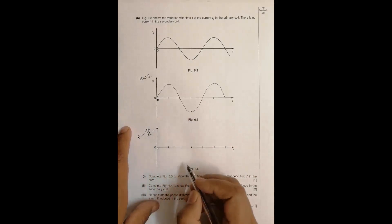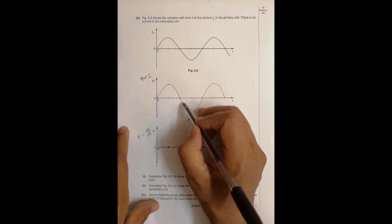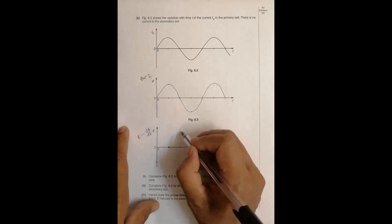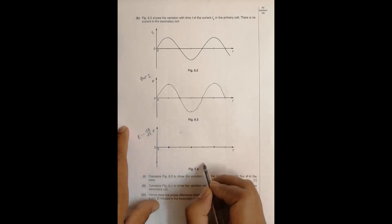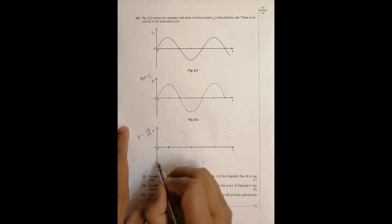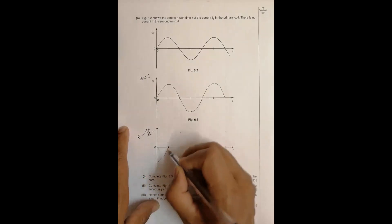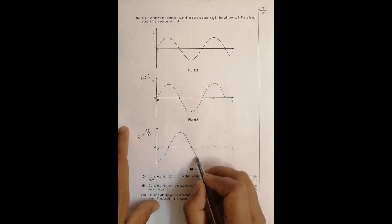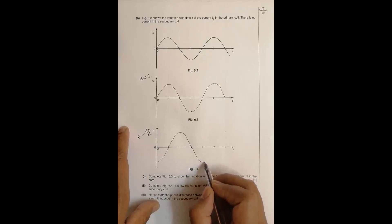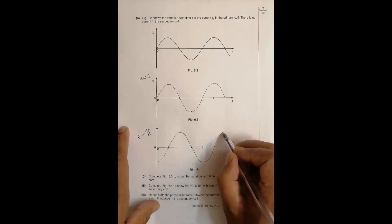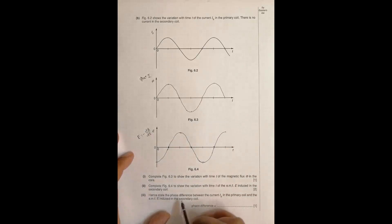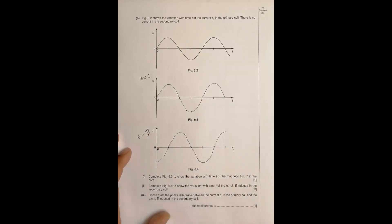Where the slope of the flux curve is negative and at its maximum magnitude, the EMF should be at its highest positive value. The resulting graph for EMF is therefore a cosine-type curve — shifted relative to the flux curve. This represents the variation of EMF in the secondary coil, and the question then asks us to state the phase difference between the primary current I_P and the induced EMF e.